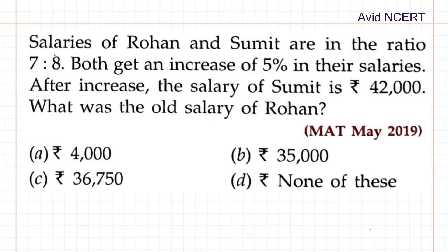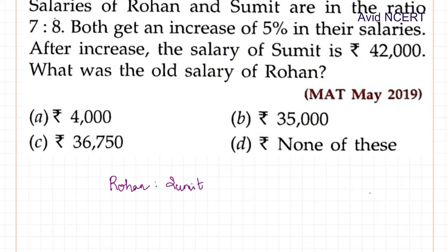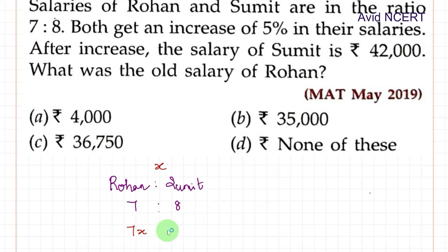So from the first sentence, the salary of Rohan to Sumit is 7 is to 8. If the salary unit is x, then it would be 7x is to 8x.